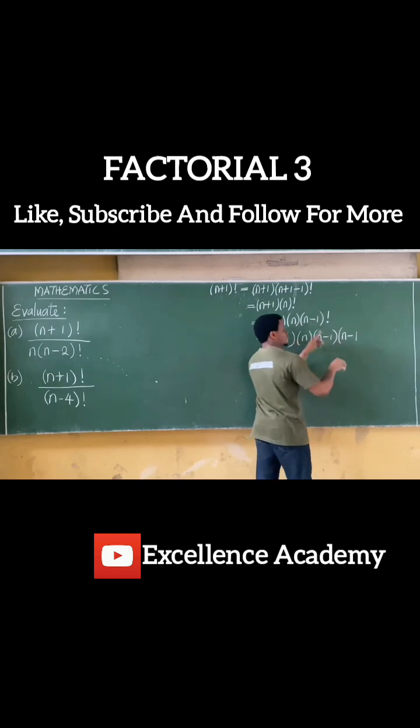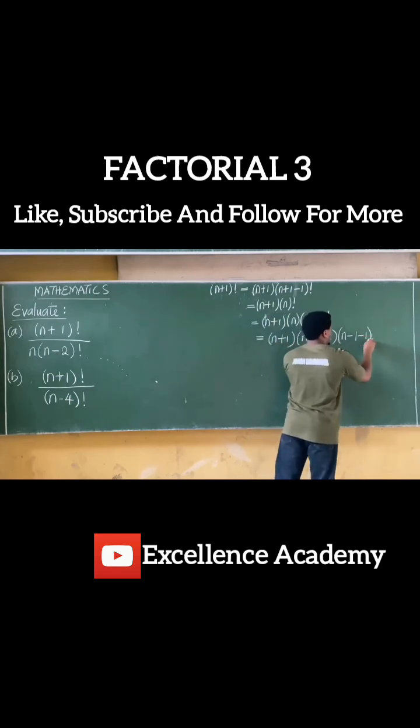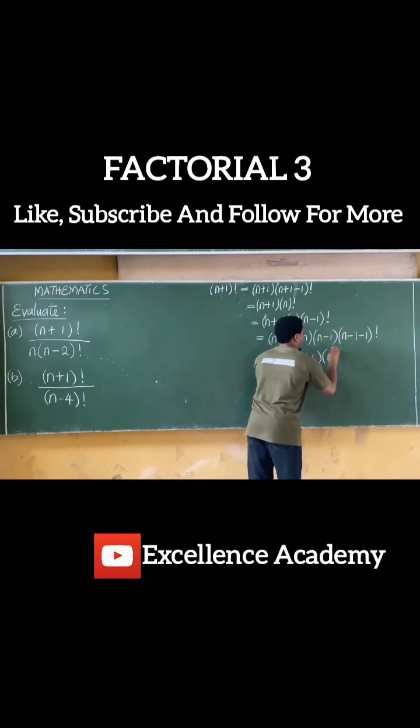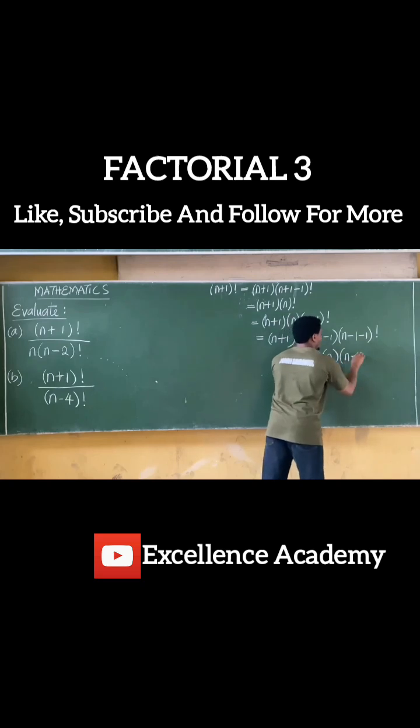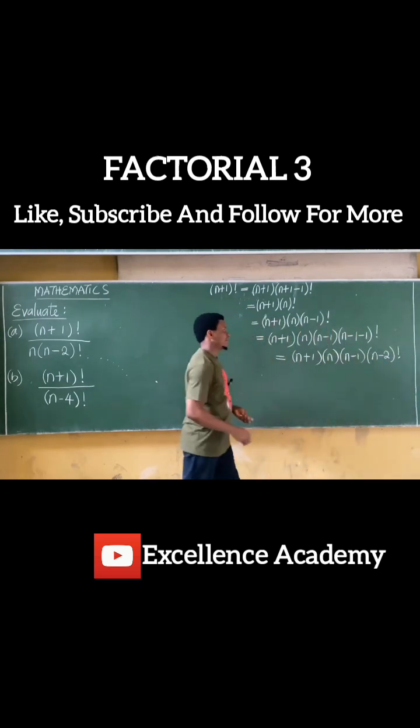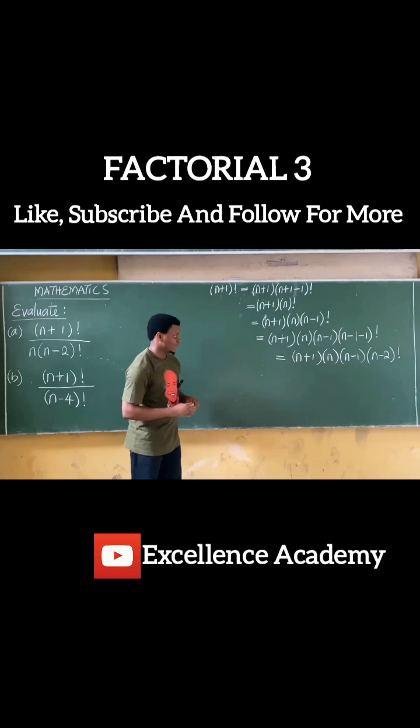That becomes n minus 1, then minus 1. Bring in the factorial. If I work on this, this equals n plus 1 into n into n minus 1 into n minus 2 factorial. So I have this as the case here.